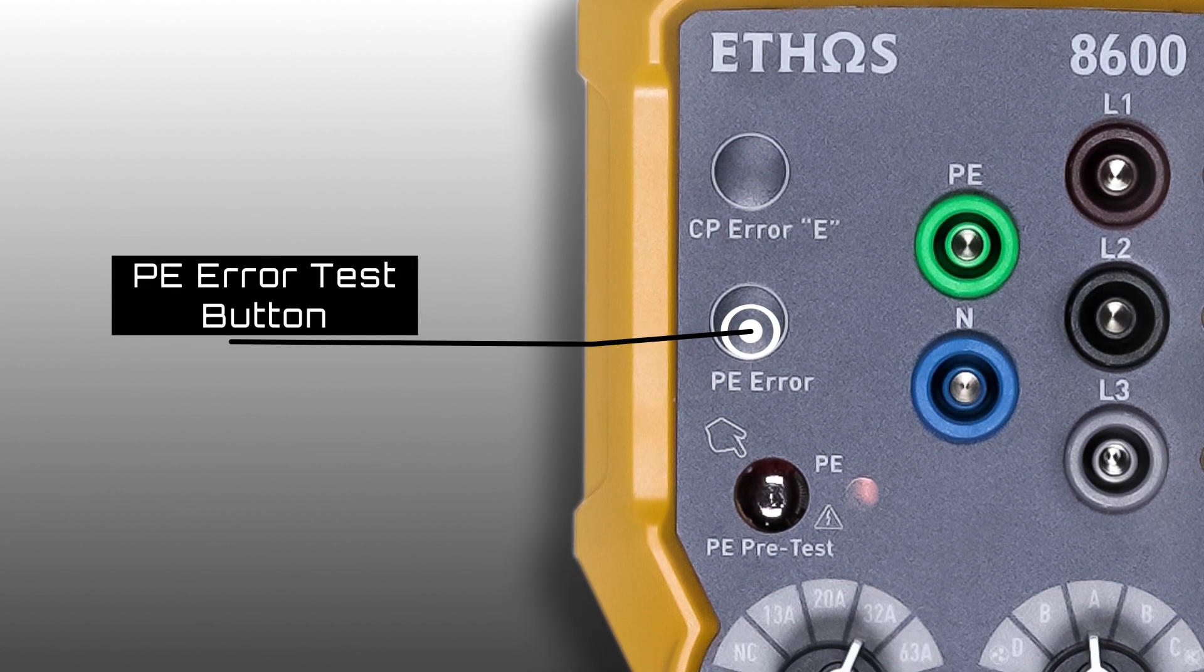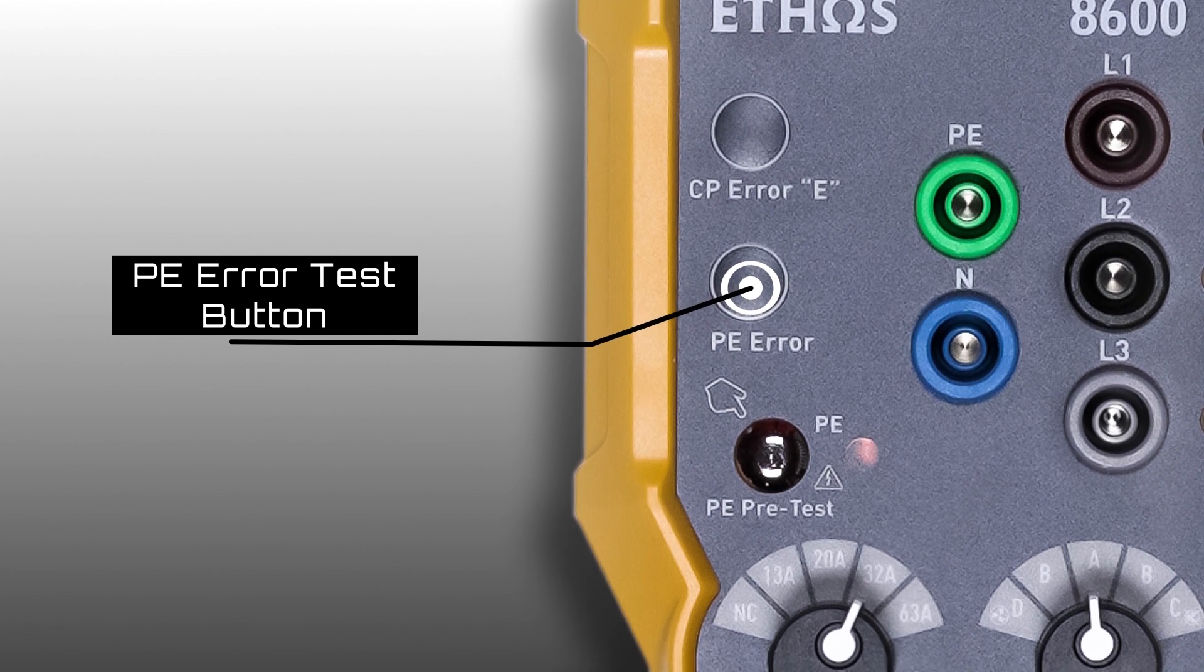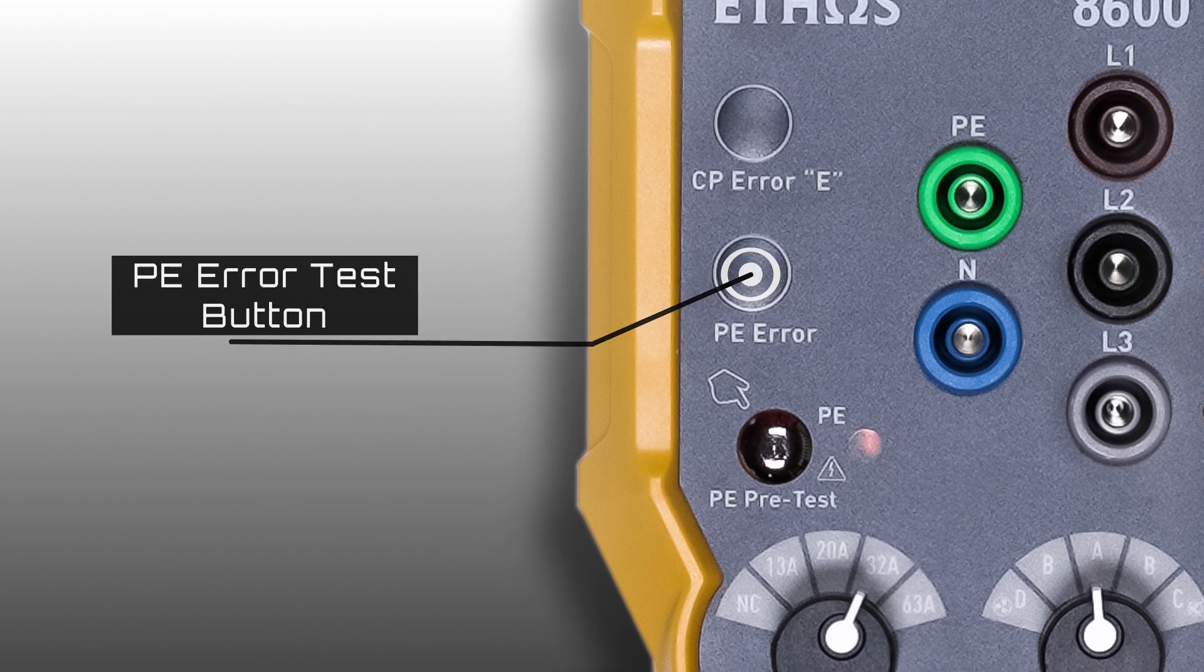PE error test button. This is pressed to simulate a fault on the earth conductor. The charge point will shut down confirming the safety process is working correctly.